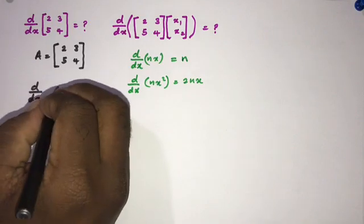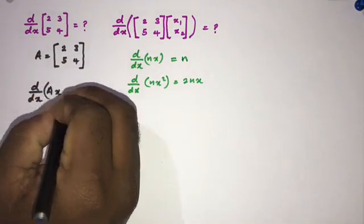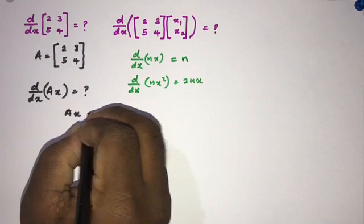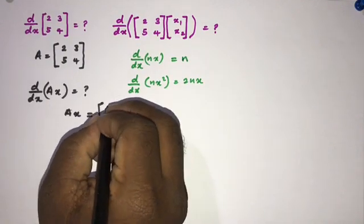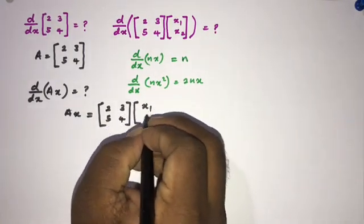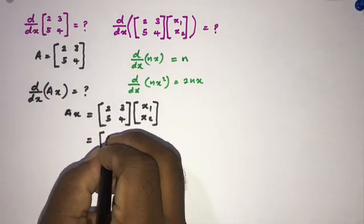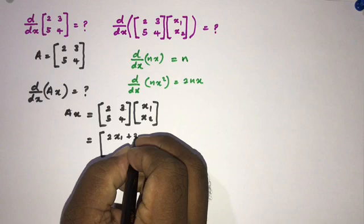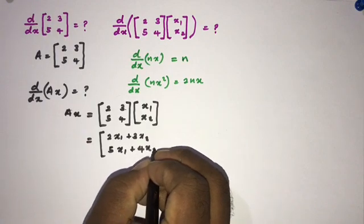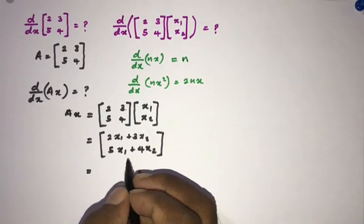Our question is: we need to find d/dx of Ax, where A is the matrix [[2, 3], [5, 4]] and x is the vector [x1, x2]. Computing Ax gives us [2x1 + 3x2, 5x1 + 4x2]. We know these are functions of x1 and x2.